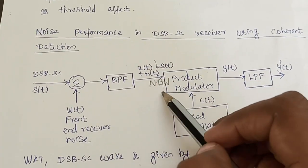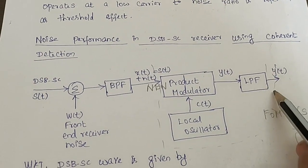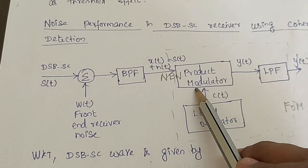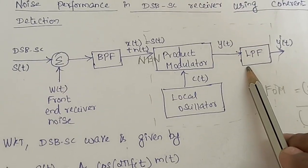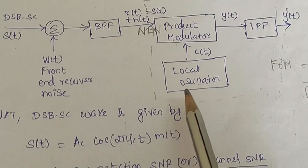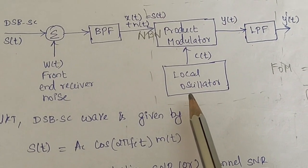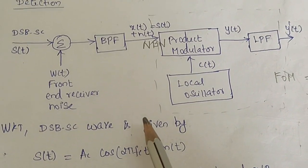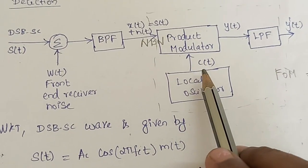These blocks represent the coherent detector: a product modulator, a local oscillator, and an LPF. Whenever we use a coherent detector to demodulate the signal, we have to regenerate the carrier signal used at the transmitter side. This carrier used for demodulation must be coherent with the carrier used for modulation. To regenerate the carrier, we need a local oscillator.